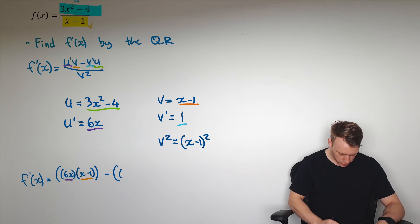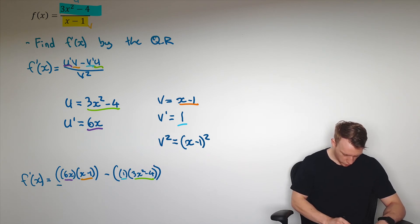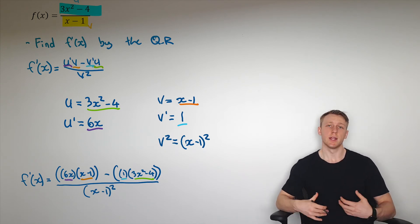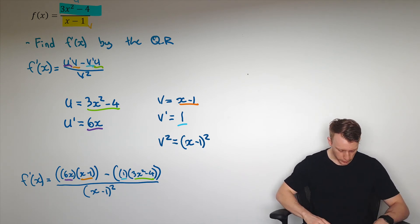Subtract away v', which is 1, times 3x² - 4. So that is my u and that is my v'. All over v², which is just (x - 1)². This is just applying the quotient rule here.